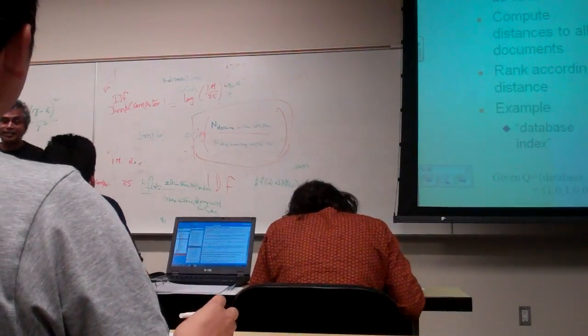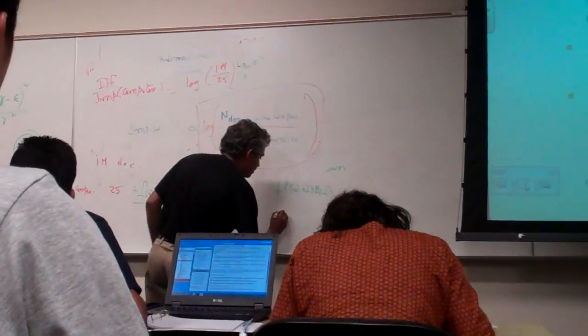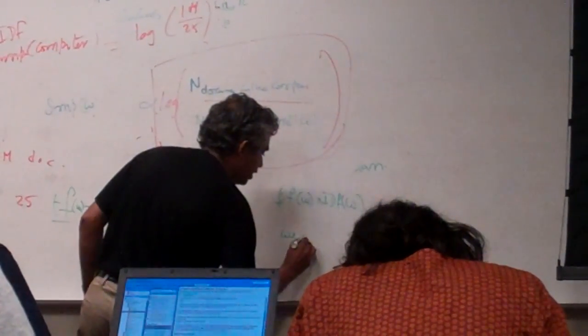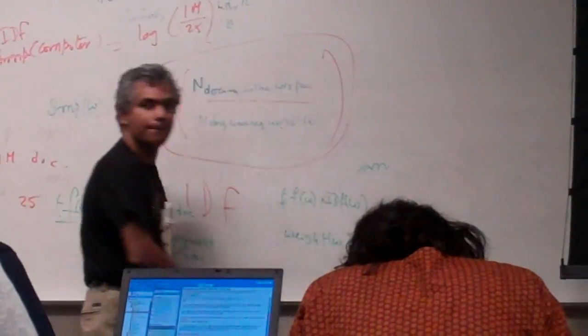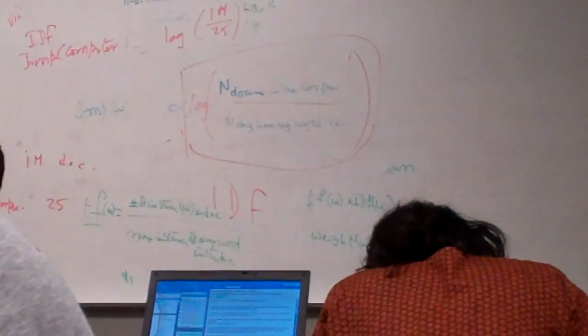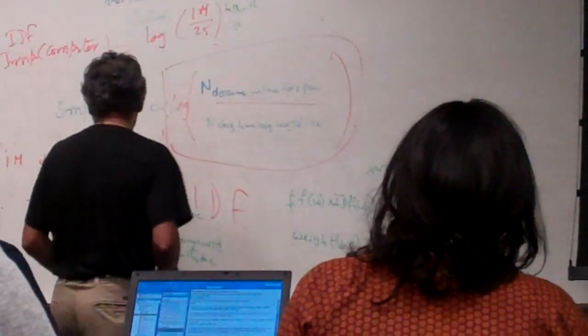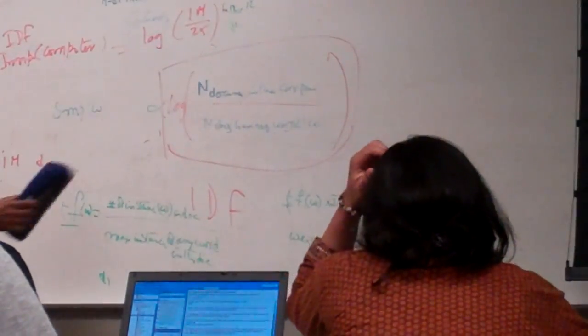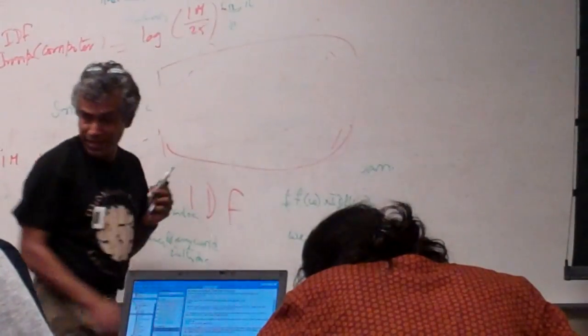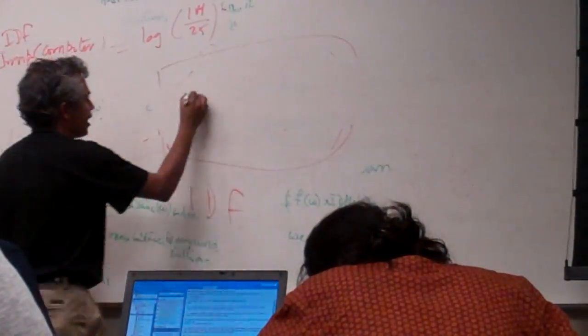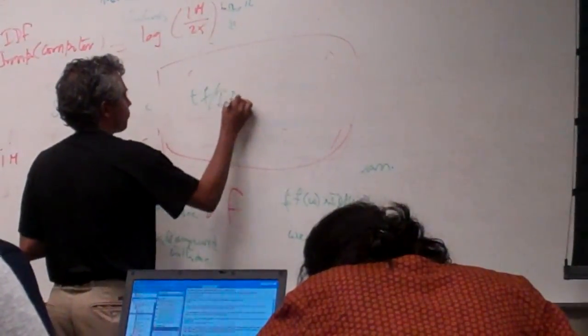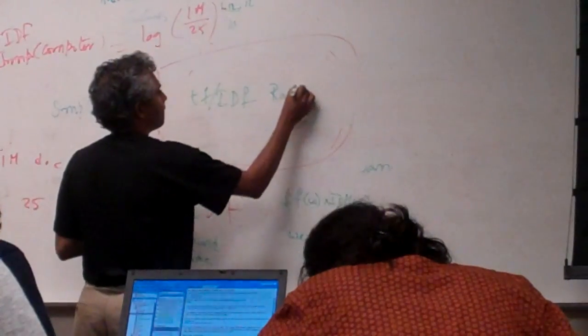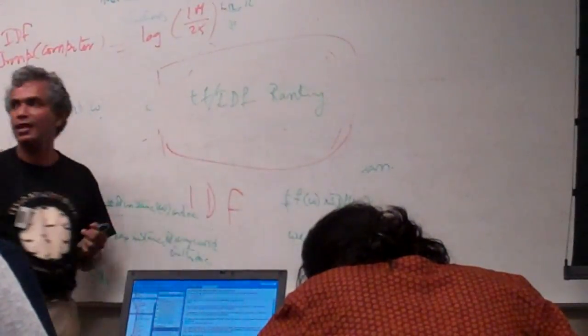And so that is the normalized weight of the word. Do you see this? That's where the most often used acronym in IR comes in, which is TF-IDF weighting.